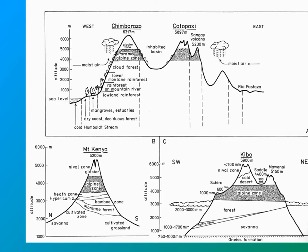Mount Kenya, shown in figure B, going high enough up, has a lot of cultivation that has cleared the forest, with bamboo growing into the alpine zone topped with a glacier — the nival zone or that under ice. Mount Kibo shows much more forest, much less cultivation, savannah below, and a cold desert above the alpine zone before the ice zone.